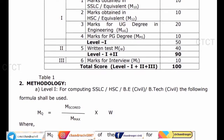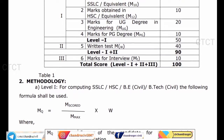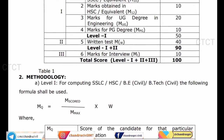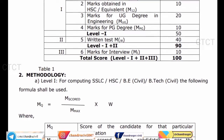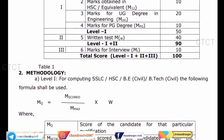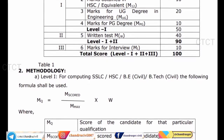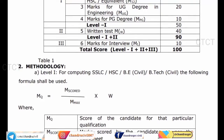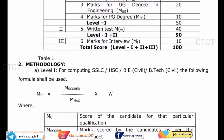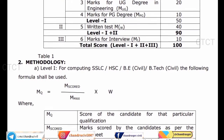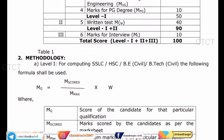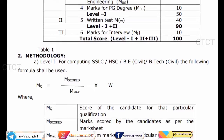MQ is equal to M scored divided by MX. The score is 400 marks and the maximum mark is 500 marks. That will be converted into W (weightage).